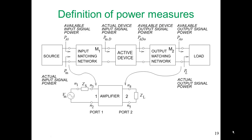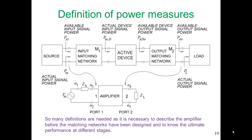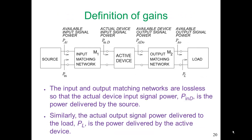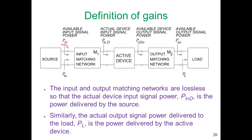With an amplifier, there are many different definitions of power and gain that are used. So many definitions are required because we use different definitions at different stages of the design process. There are powers at the input, such as the available input power — the maximum power we can get from the source. But that may not be the same as the power that's input to the network because there could be reflections from the input matching network.